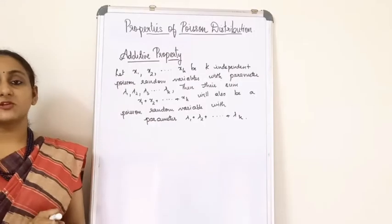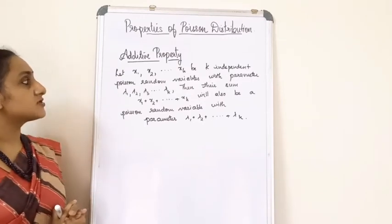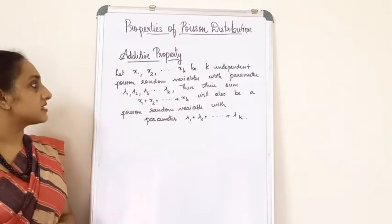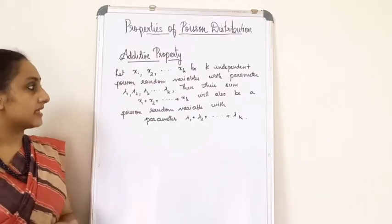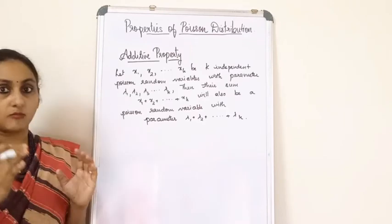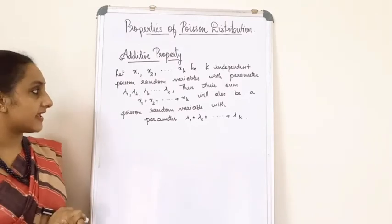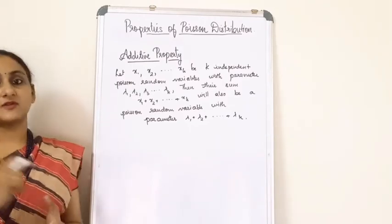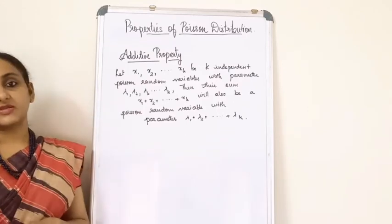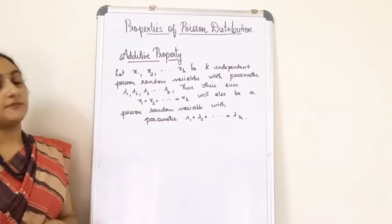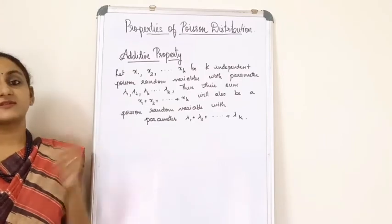Now let's look at the additive property of the Poisson distribution. If X₁, X₂, …, Xₖ are k independent Poisson random variables with parameters λ₁, λ₂, …, λₖ respectively, then their sum X₁ + X₂ + … + Xₖ is also a Poisson random variable with parameter λ₁ + λ₂ + … + λₖ.